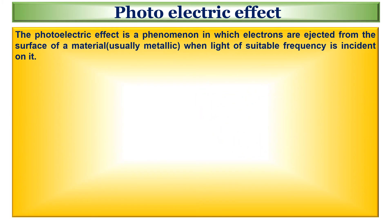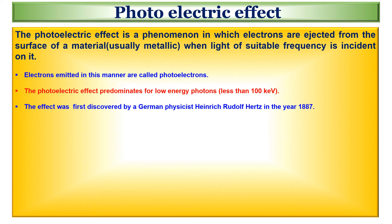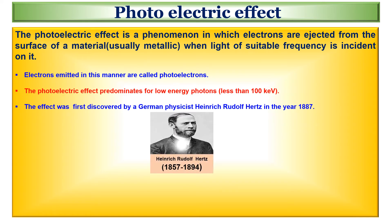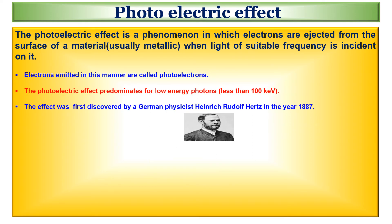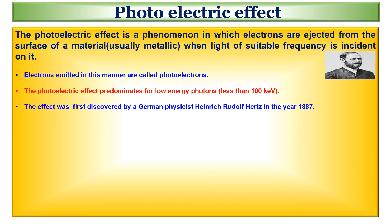The photoelectric effect is a phenomenon in which electrons are ejected from the surface of a material, usually metallic, when light of suitable frequency is incident on it. Electrons emitted in this manner are called photoelectrons. The photoelectric effect predominates for low energy photons. The effect was first discovered by German physicist Heinrich Rudolf Hertz in the year 1887.